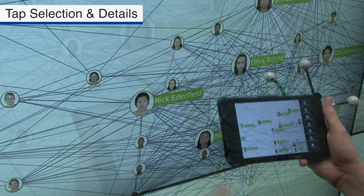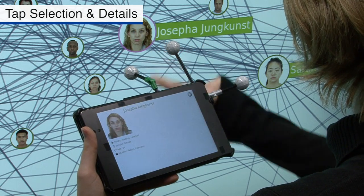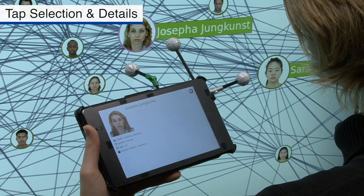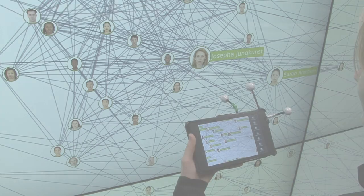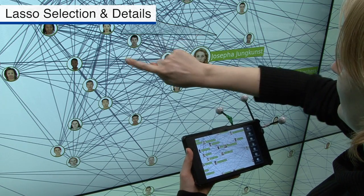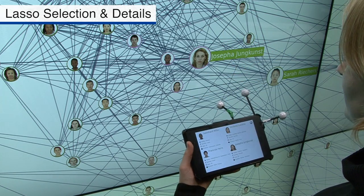After selection, the role of the mobile device changes to a second screen for additional visual output. When aiming to select multiple elements, we support selection by encircling the nodes.